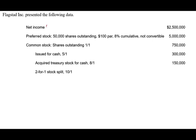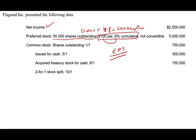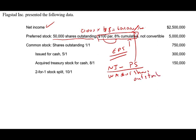We have net income of $2.5 million. For preferred stock, we have to be careful. We have 50,000 shares outstanding, $100 par value, 8% cumulative. This is important — it means each shareholder gets $8 per share, which is 100 times 8%. With 50,000 shares, we have to pay the preferred shareholders $400,000 per year. Whether we pay them or not, for the EPS computation we always deduct this $400,000 because the preferred is cumulative.